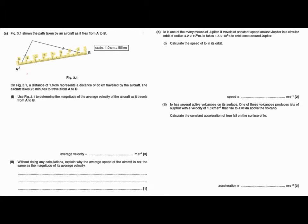Part i says use the figure 3.1 to determine the magnitude of the average velocity of the aircraft as it travels from A to B. So we need to remember that average velocity is equal to total displacement over total time.